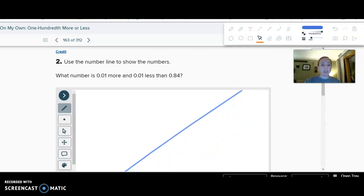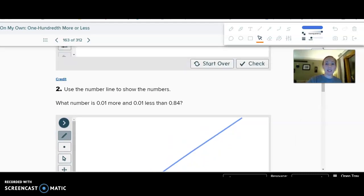What number is one-tenth more and one-tenth less than 84 hundredths? Go ahead and choose. All right, hope you got it.